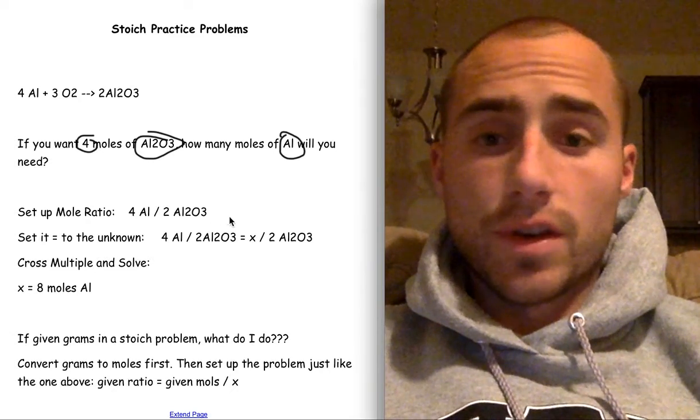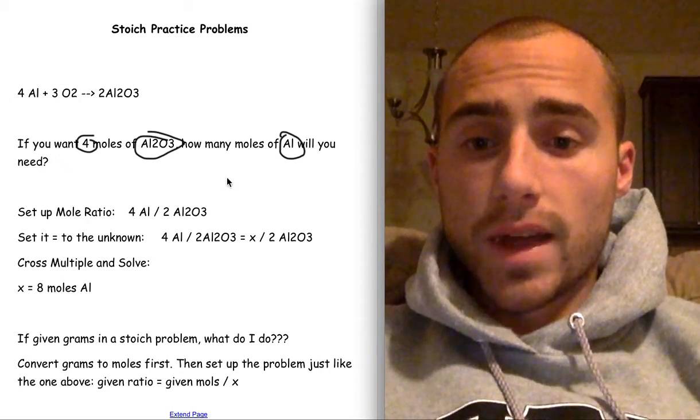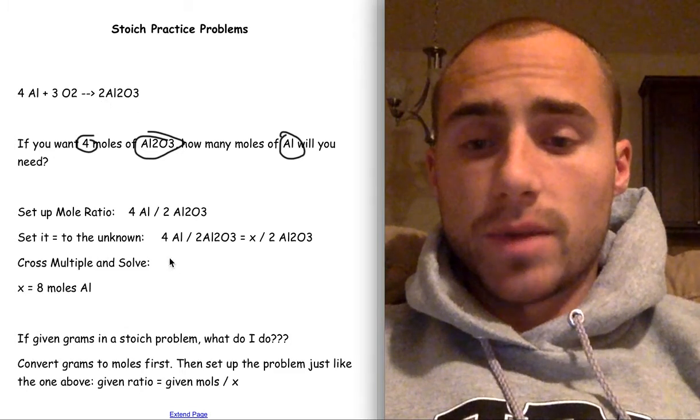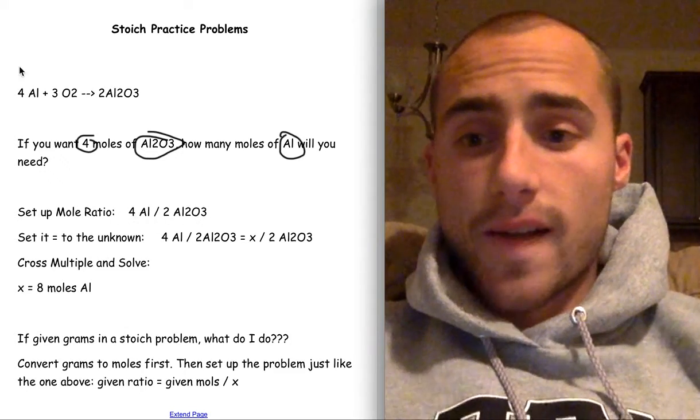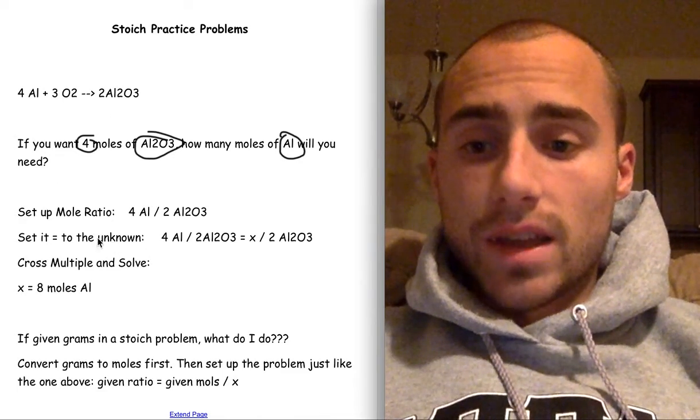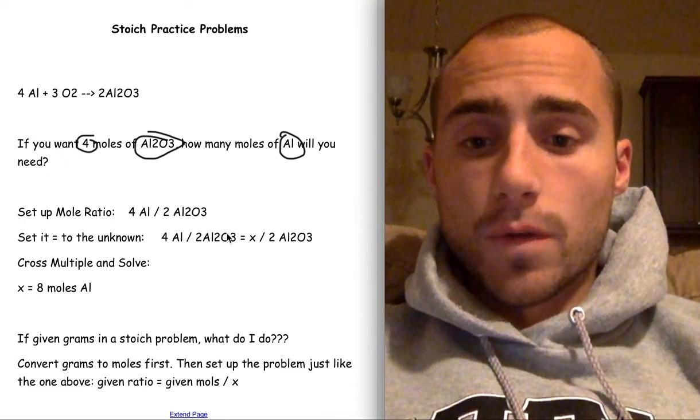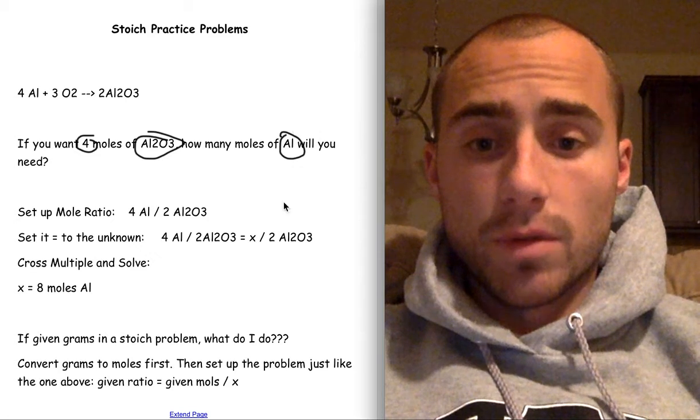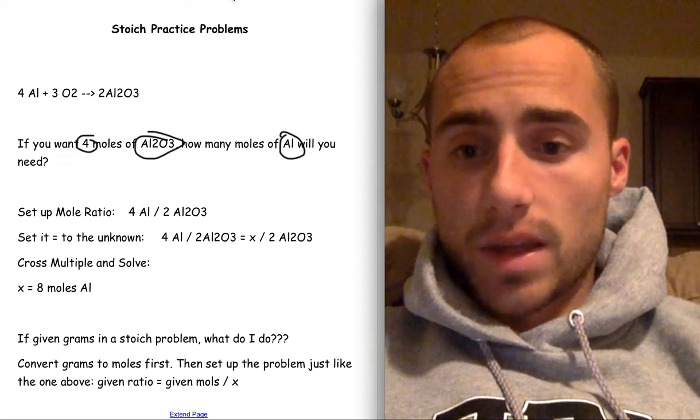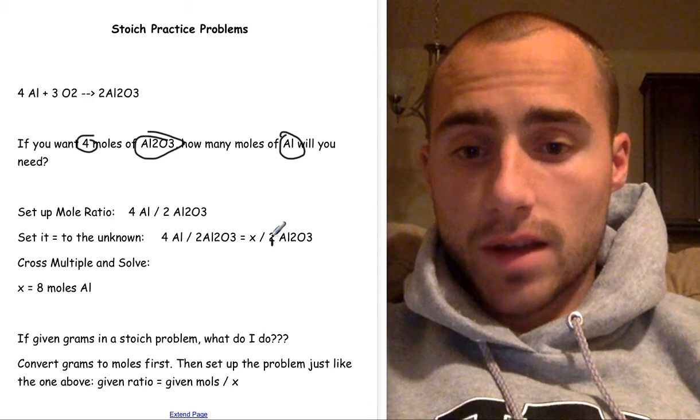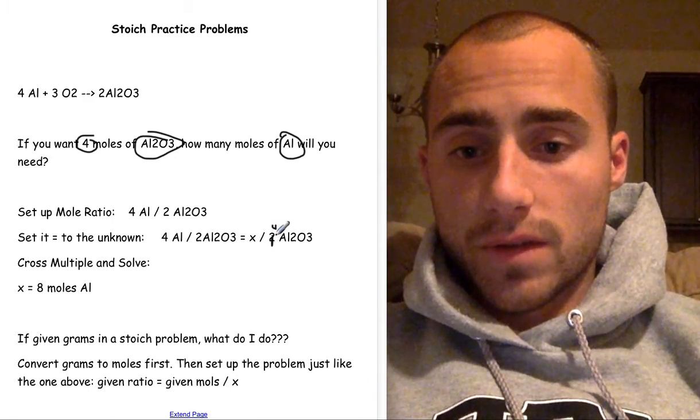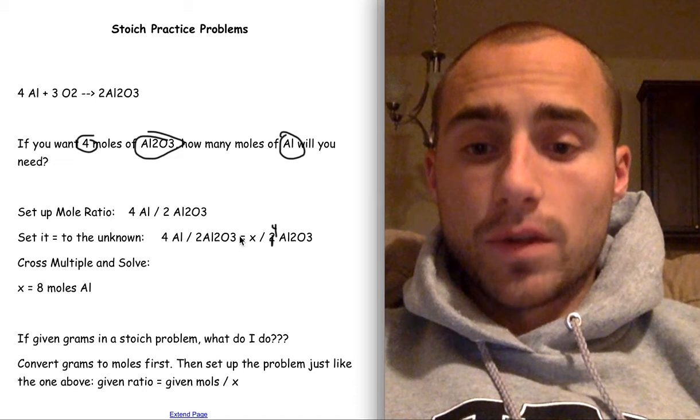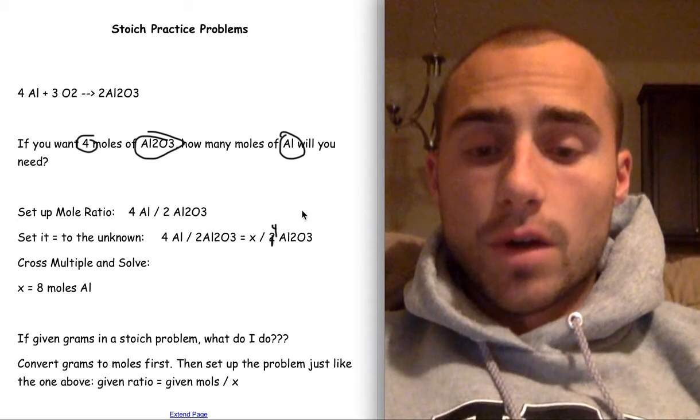So you set up your initial mole ratio. Remember, you get this directly from the coefficients. So you have 4 Al, because we care about Al and reactant always goes first. 4 Al over 2 aluminum oxide. This mole ratio, the first thing you write down, I get directly from the problem. Then you set it equal to the unknown, so you put 4 Al over 2 Al2O3 equals x, because we don't know how much aluminum we want, over, and that should be, sorry, that should be 4, first mistake of the night. That should be a 4, because that was given to us in the problem, 4 aluminum oxide, right there. So you have 4 Al over 2 aluminum oxide equal to x over 4 aluminum oxide.